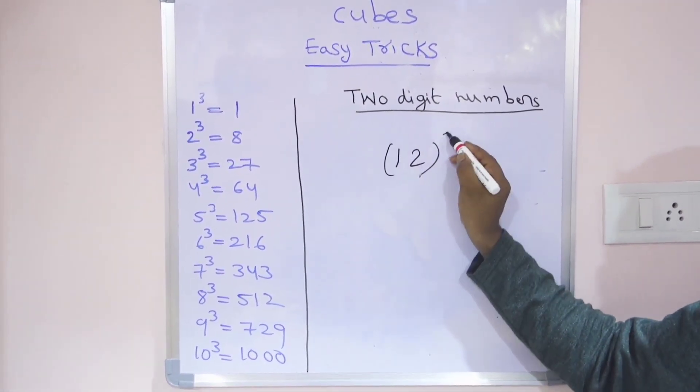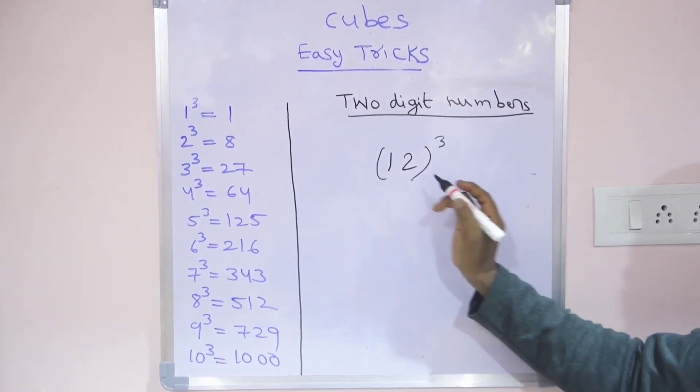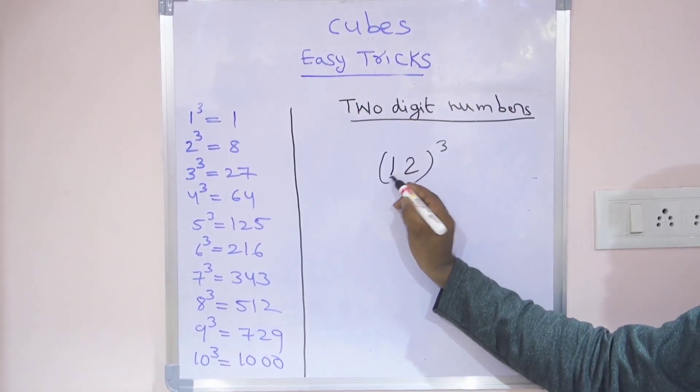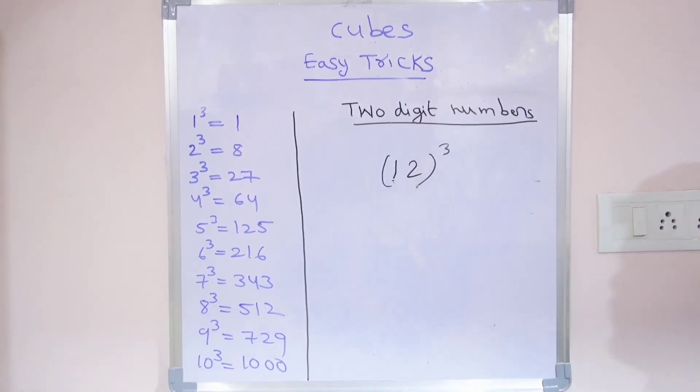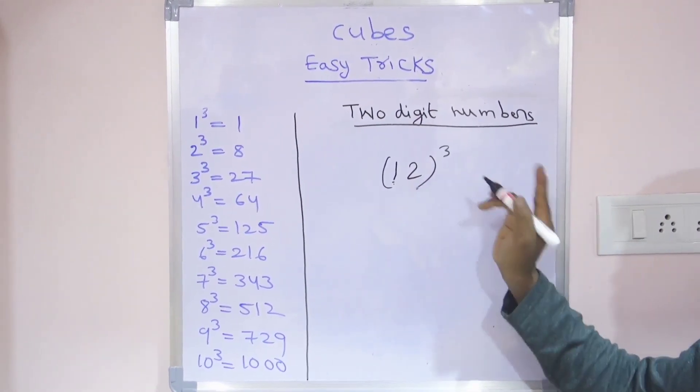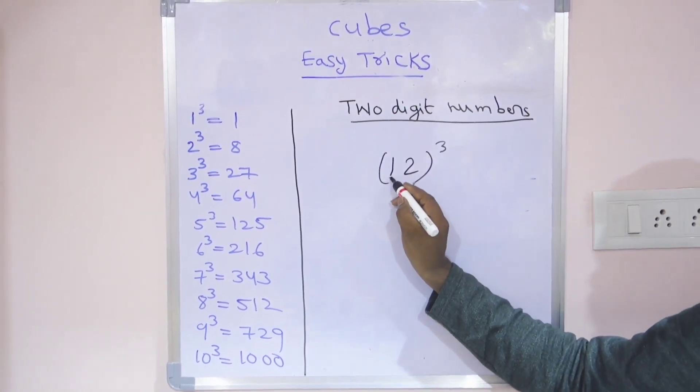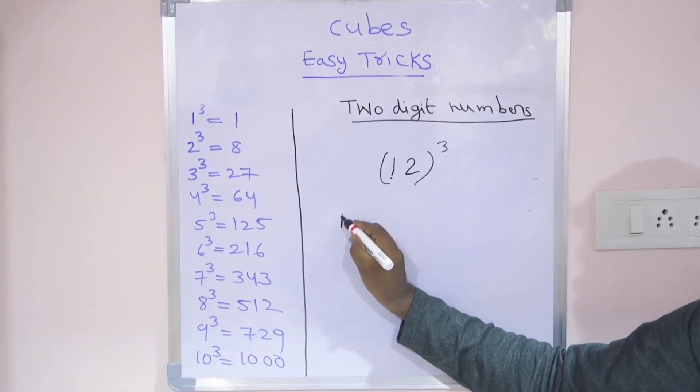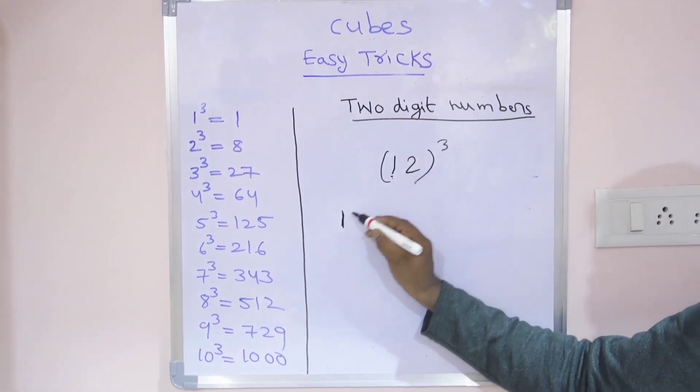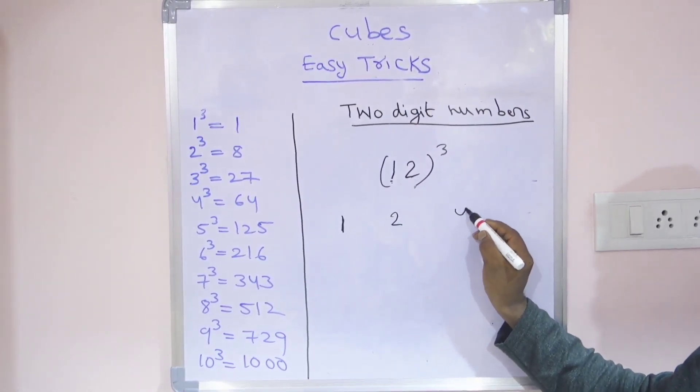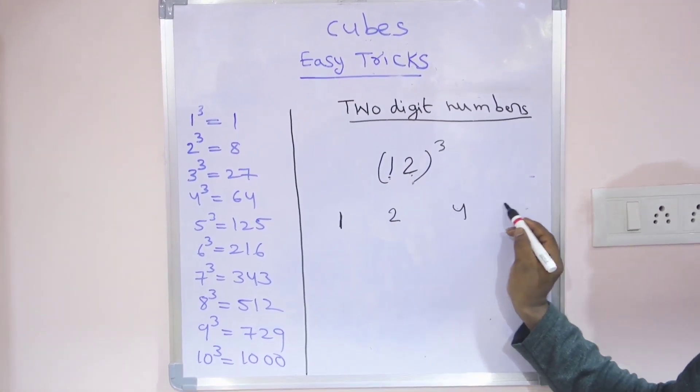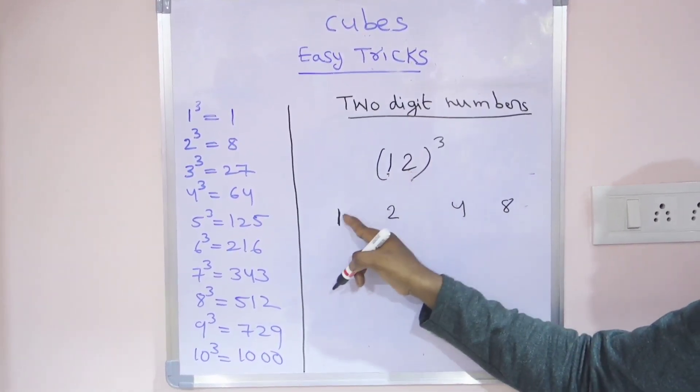Cubes of two digit numbers. First I will take 12 cube. How to find 12 cube? First of all, observe that it is starting with one. If any number starting with one, apply this trick. The ending number can be any number. Here, first write one, next 2 times 1 is 2, 2 times 2 is 4, 2 times 4 is 8.